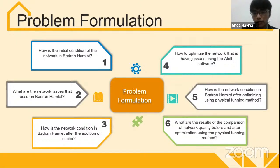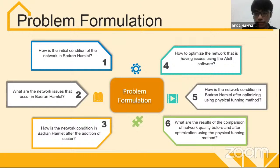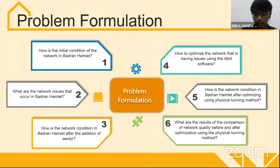Fourth, how to optimize the network that is having issues using ATOLL software? Fifth, what is the network condition in Quadrant Hamlet after optimizing using physical tuning parameters? And lastly, what are the results of the comparison of network quality before and after optimization using the physical tuning method?